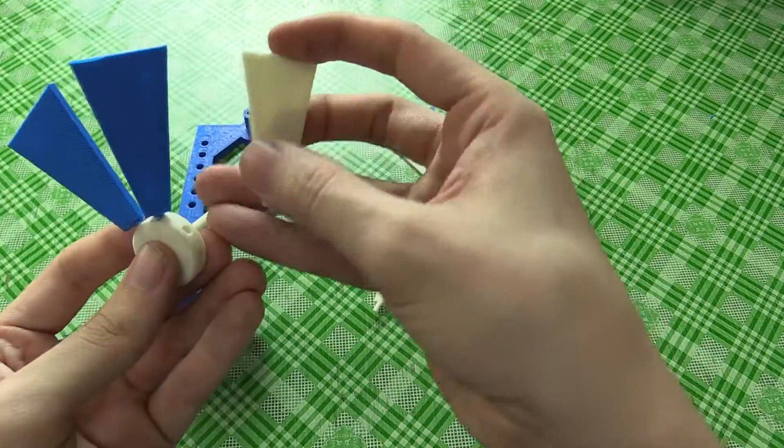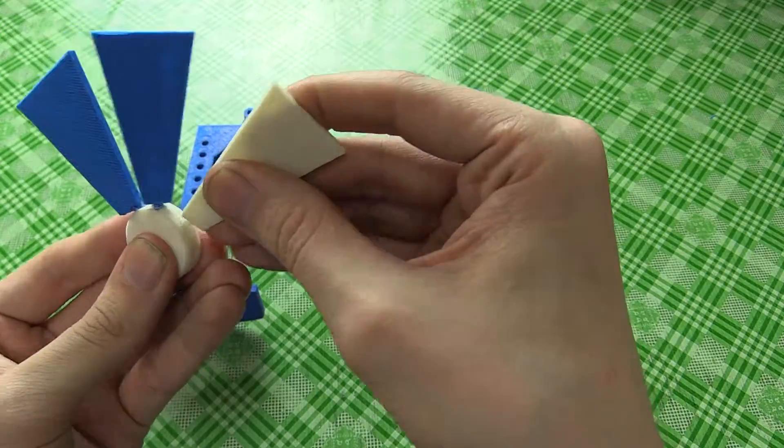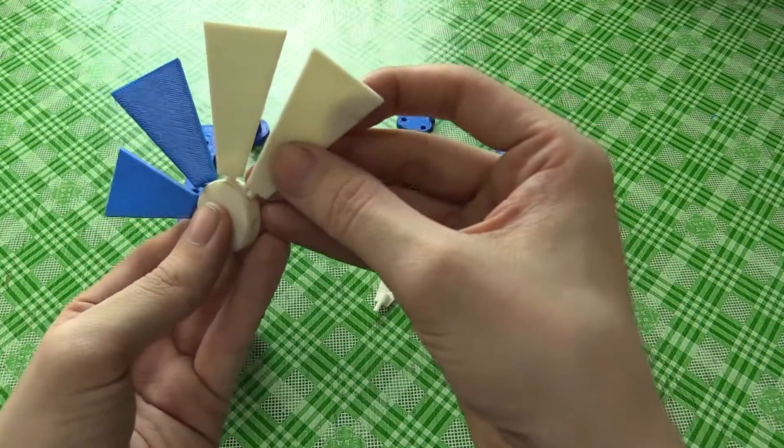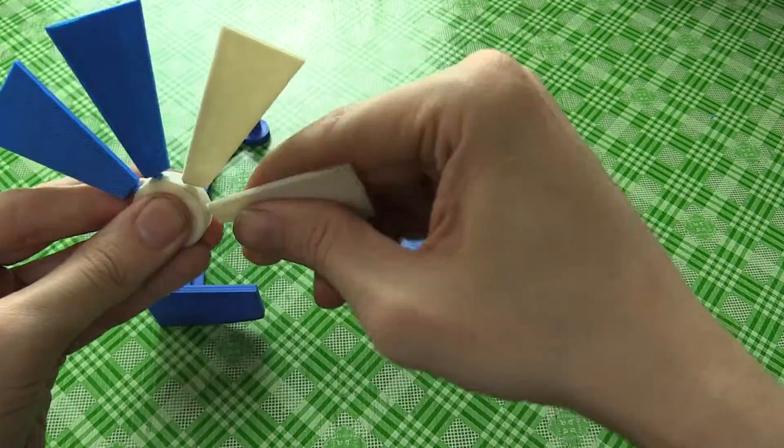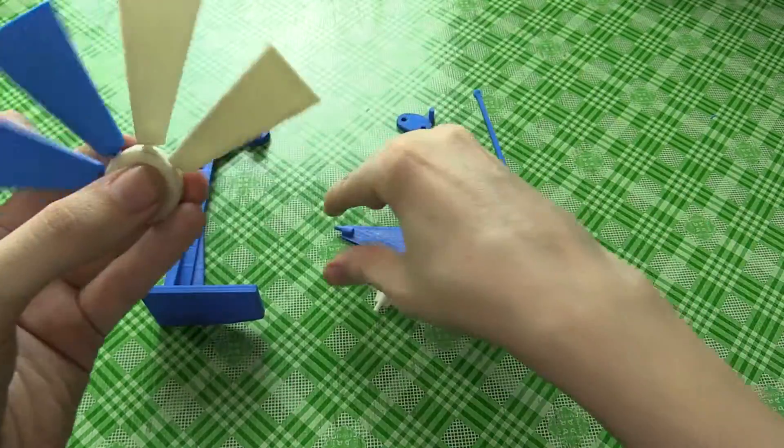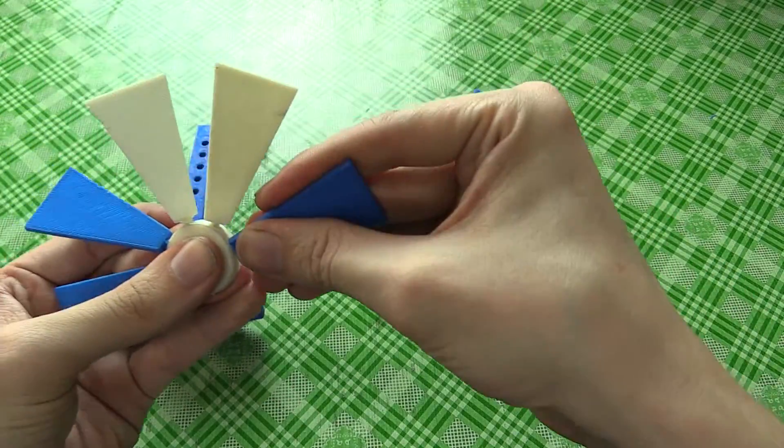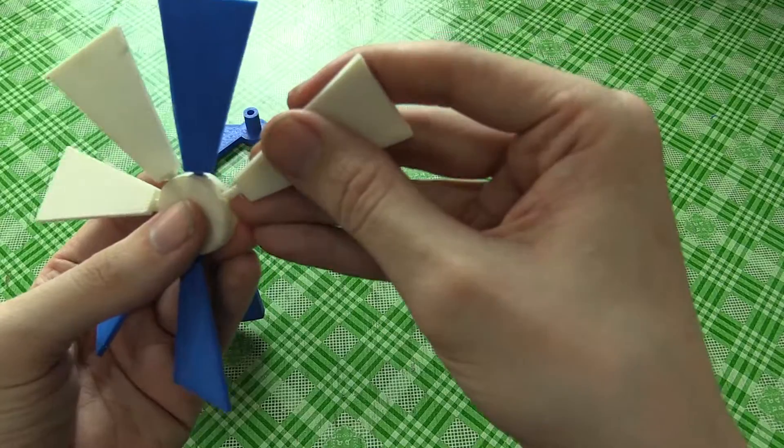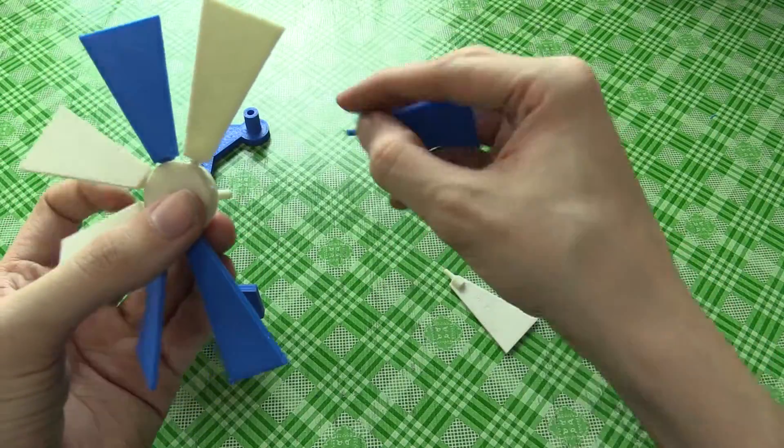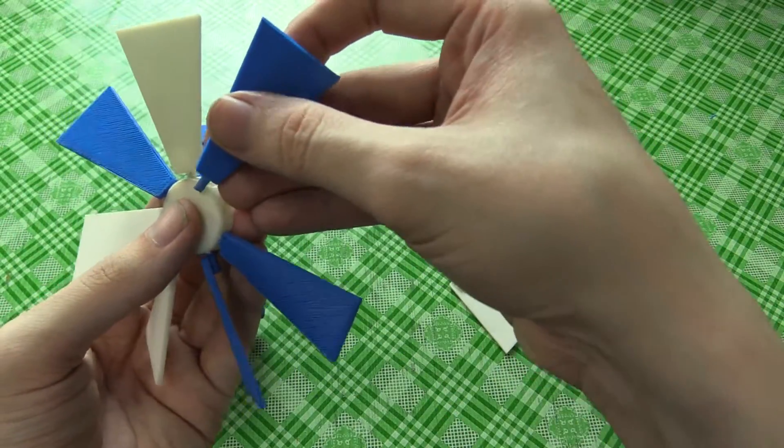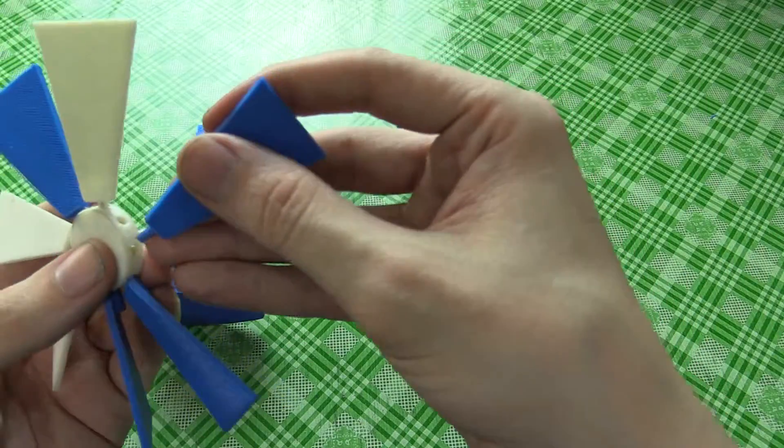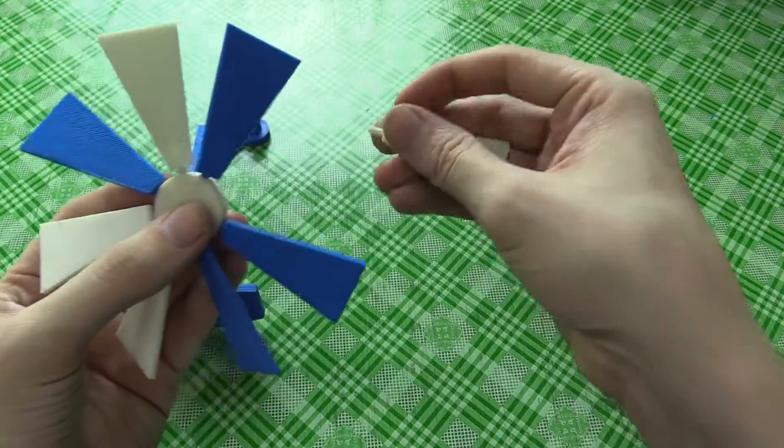But you can just squeeze them in. I won't put these in in any specific color order. Just do it randomly. Some of them might be tighter than others. They're all generally quite a tight fit which is good because it means you can adjust the angle easily. If you can't fit them in if they're really too tight just give it very light sanding around the edge.